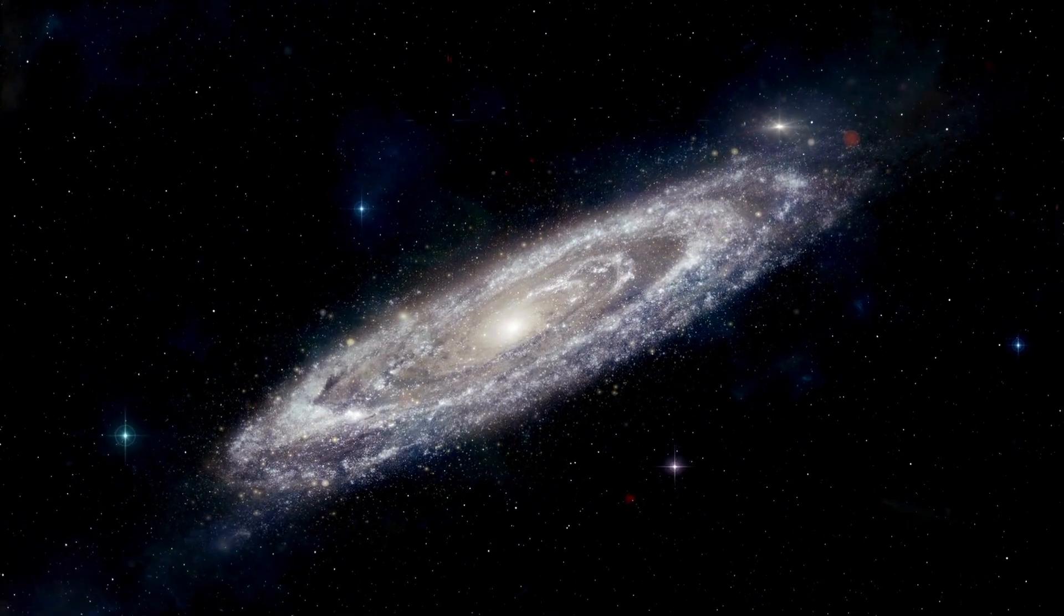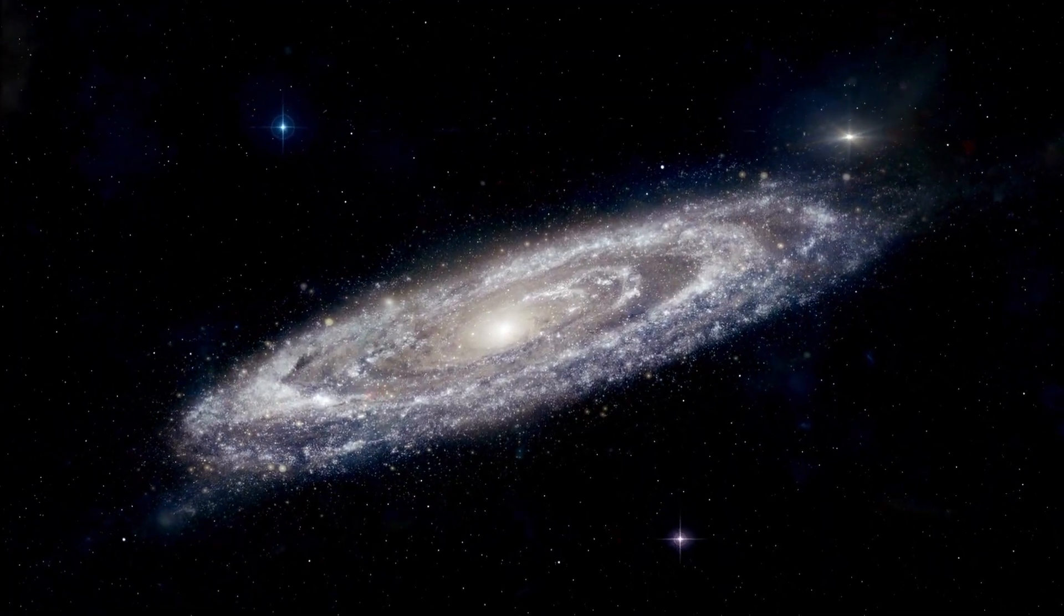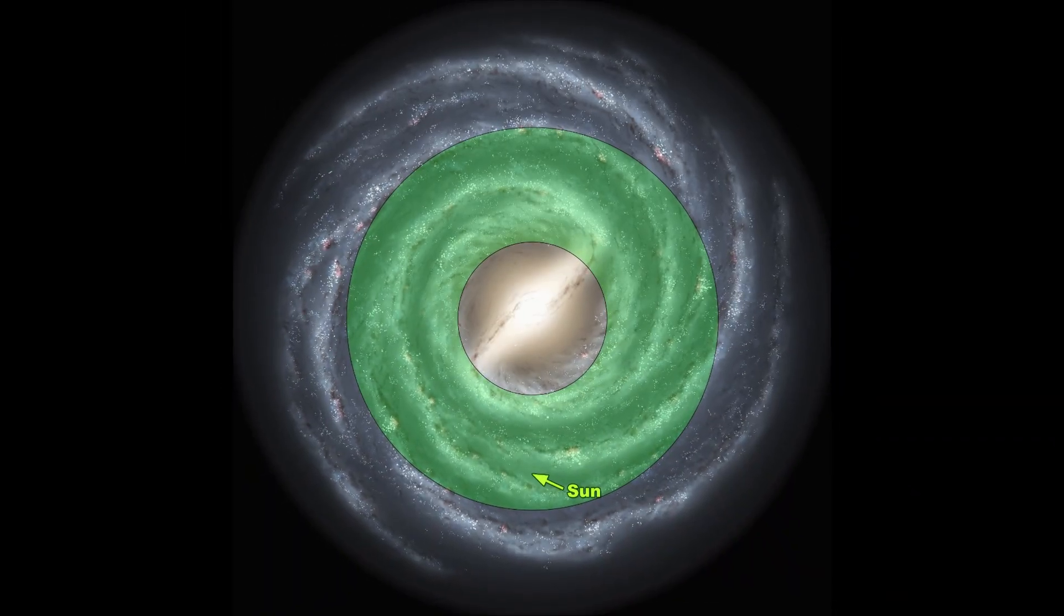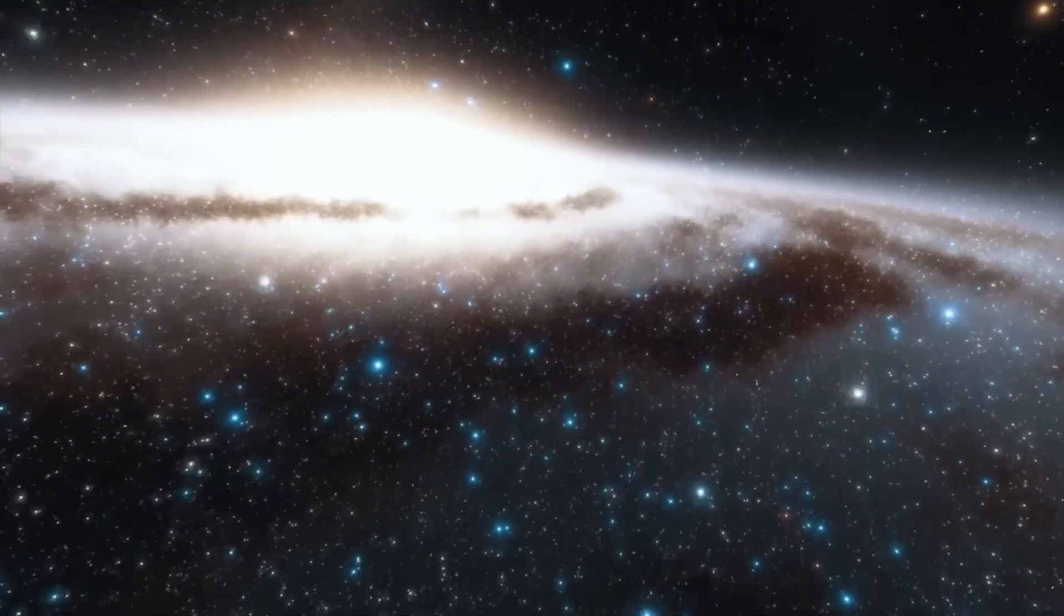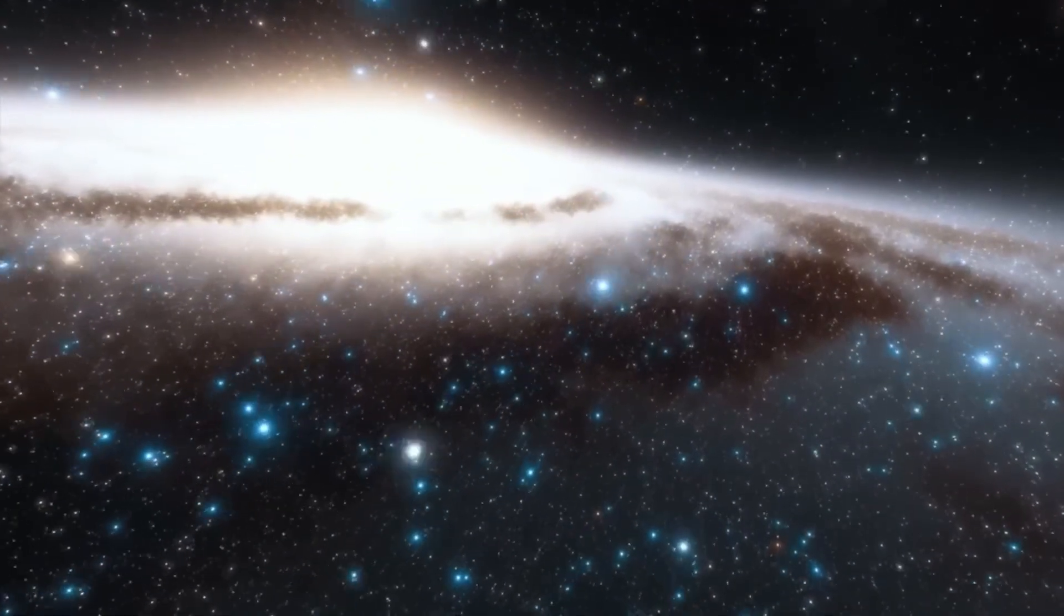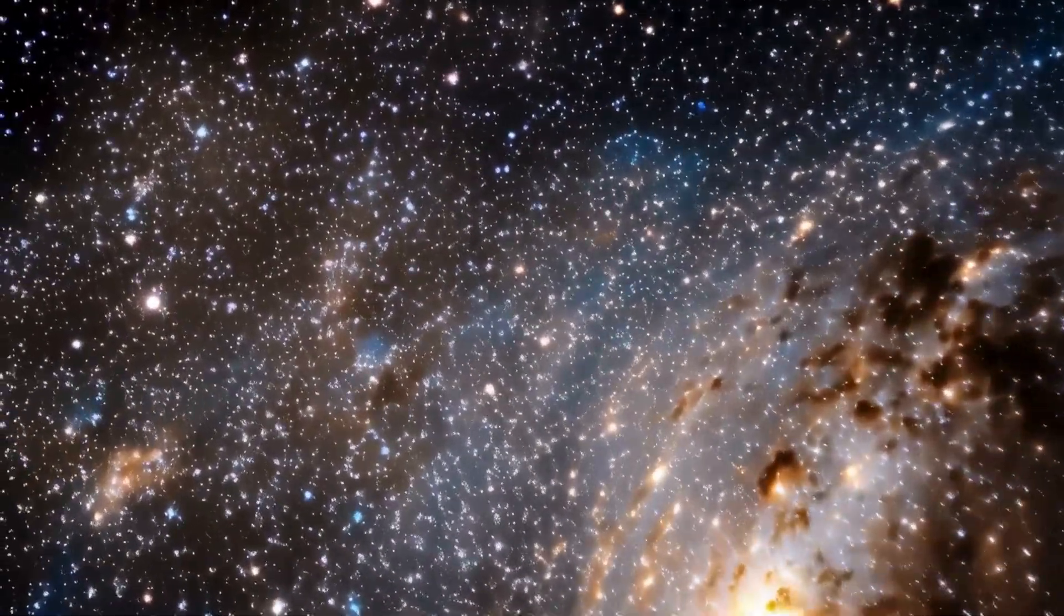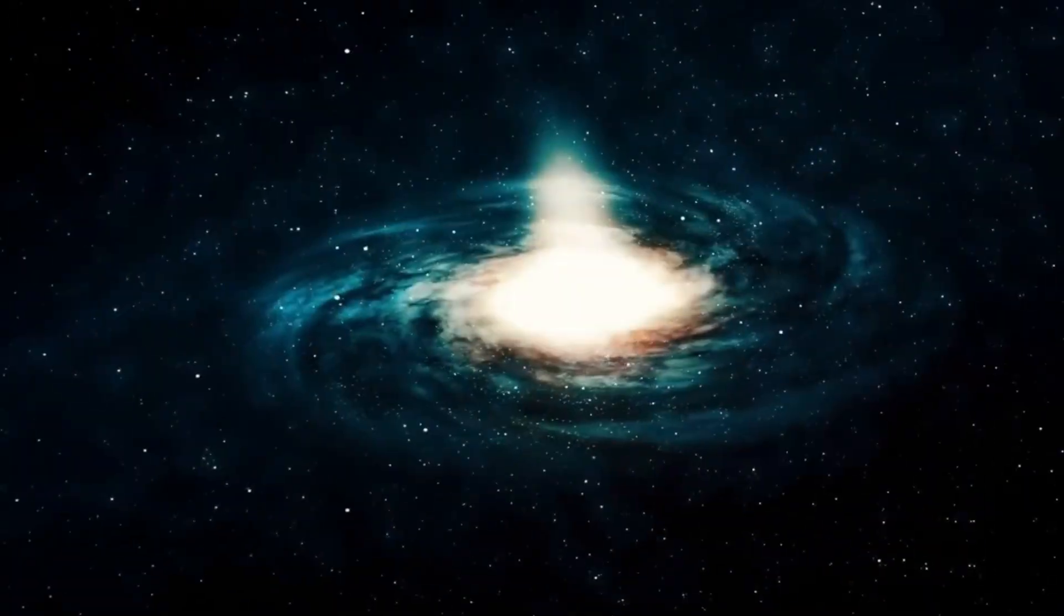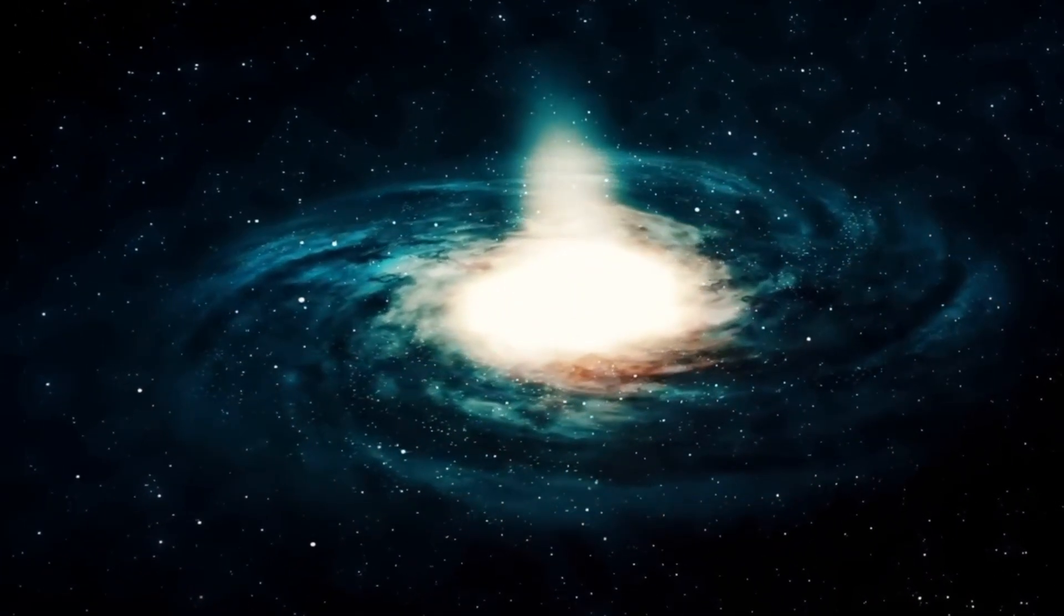Nearby stars, giant gas clouds, and elusive dark matter all tug on us. Right now, we sit roughly 20 light-years above the Milky Way's mid-plane. Within a few million years, we'll crest near 300 light-years above it, then drift back down. Some scientists have linked these vertical swings to pulses of radiation exposure, and even to extinction patterns.